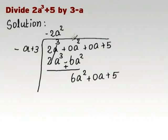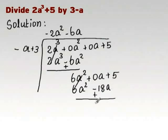Second term in the quotient is minus 6a, which when multiplied with the divisor, gives 6a squared minus 18a.